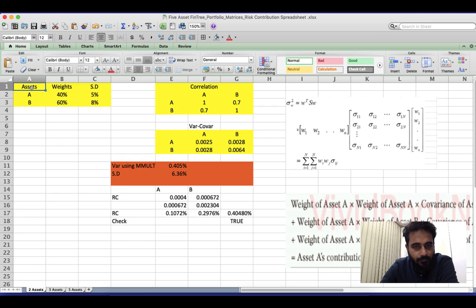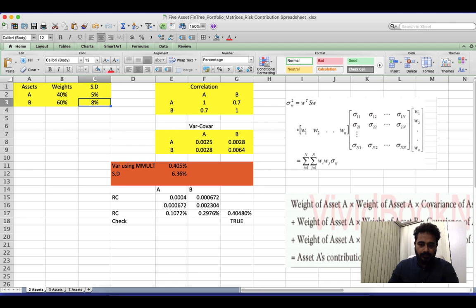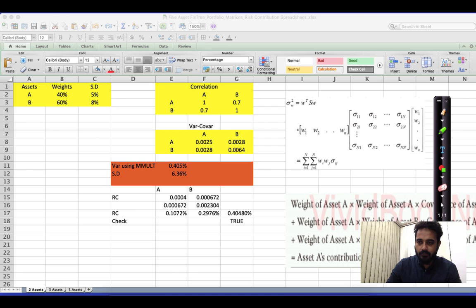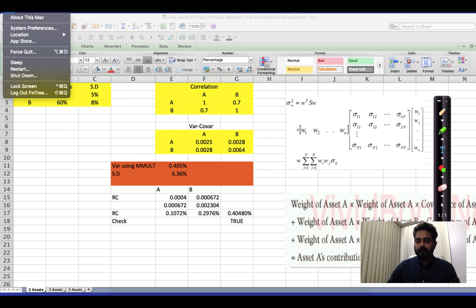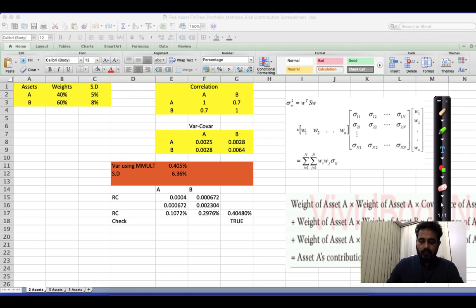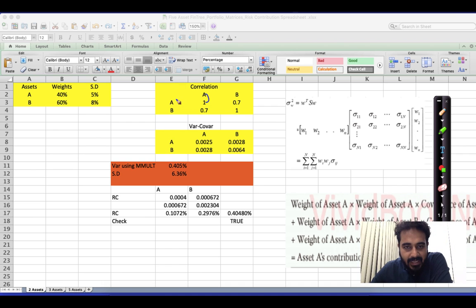So here is the setup. We have assets A and B, we have their weights, we have their standard deviation. Now what we have here is a correlation matrix. Observe the correlation between A and A is 1 and the correlation between B and B is also going to be 1. You typically find all the diagonal correlations to be 1 in a correlation matrix. What is important for us is correlation of A and B which is 0.7, and it has to be the same number as the correlation of B and A.